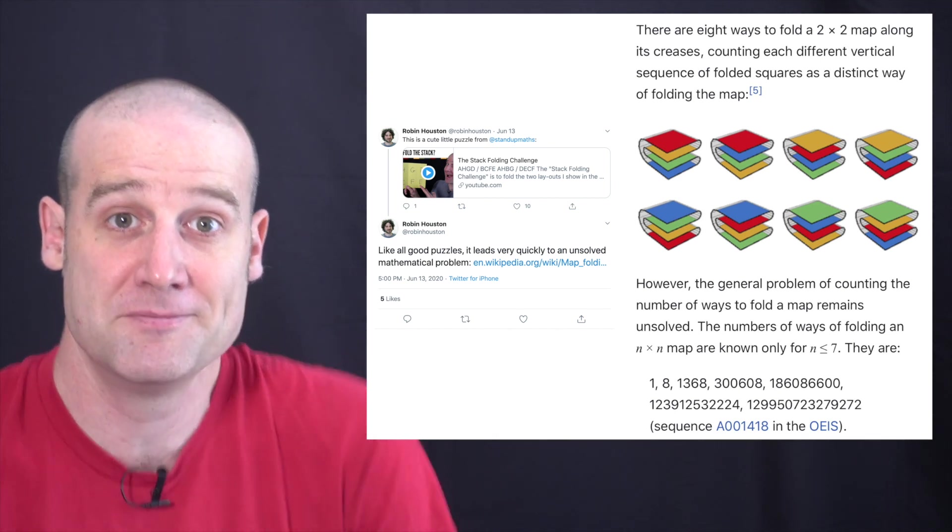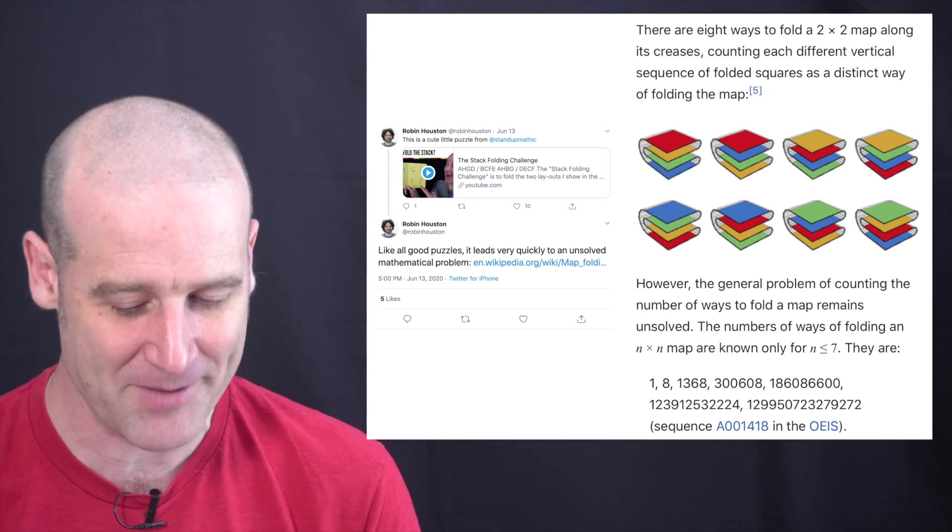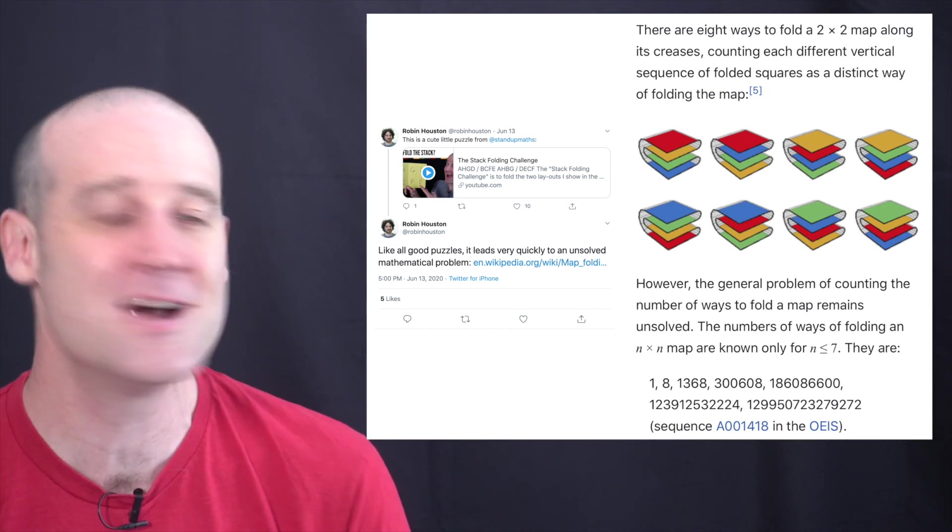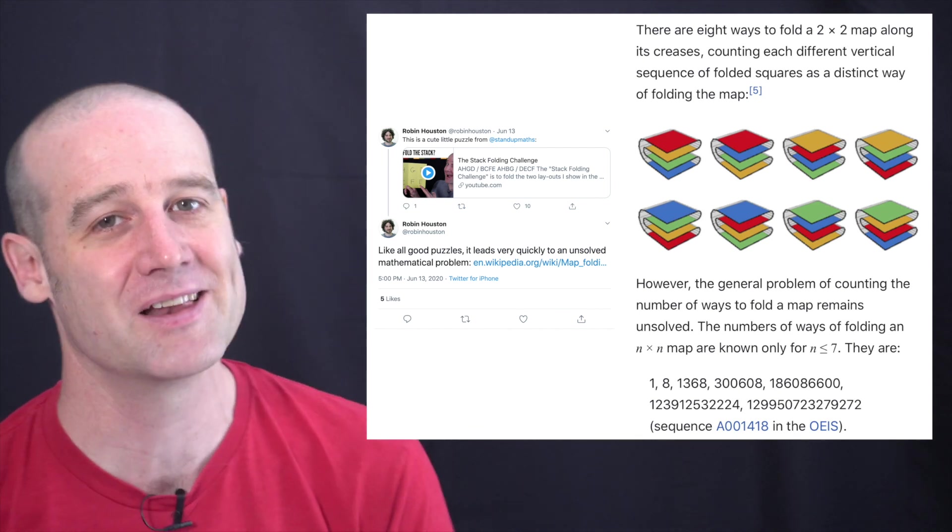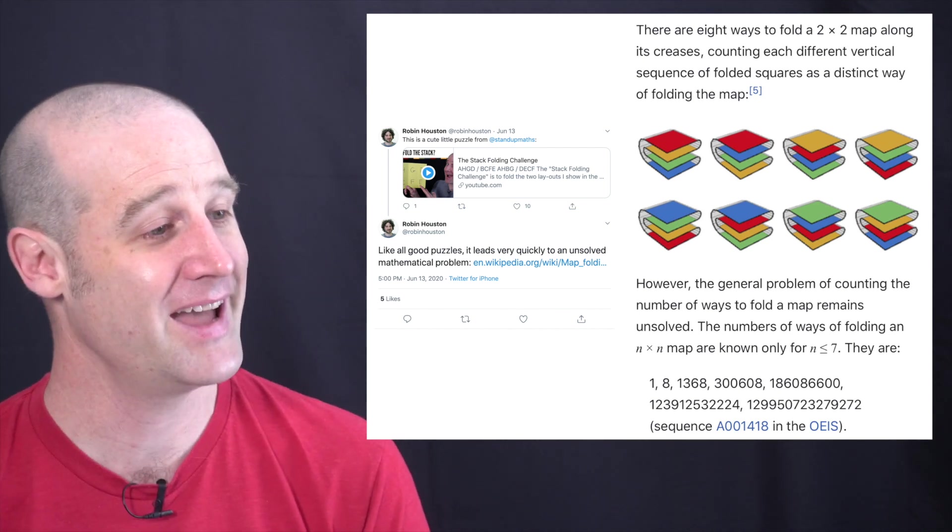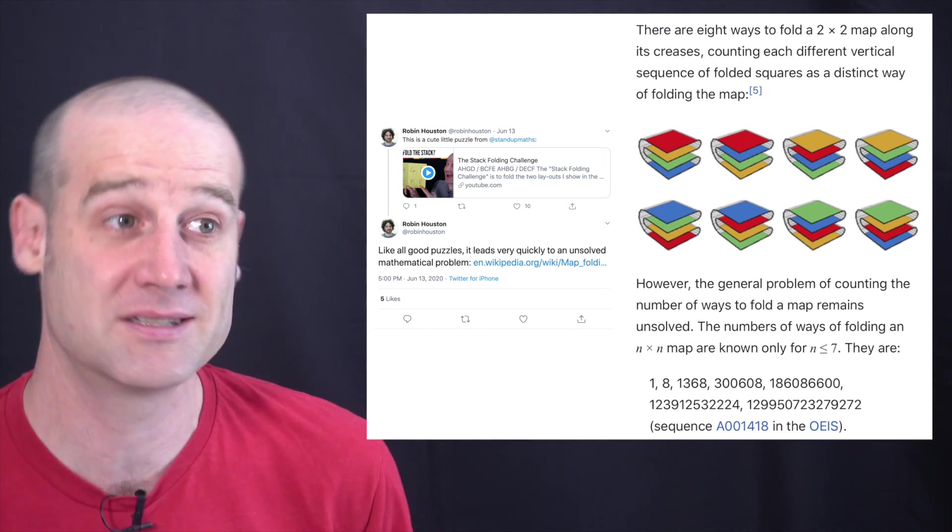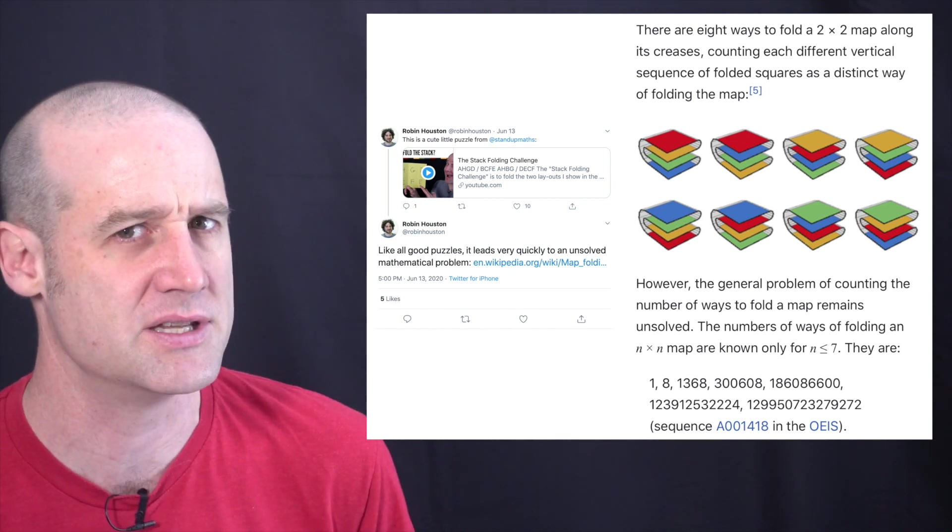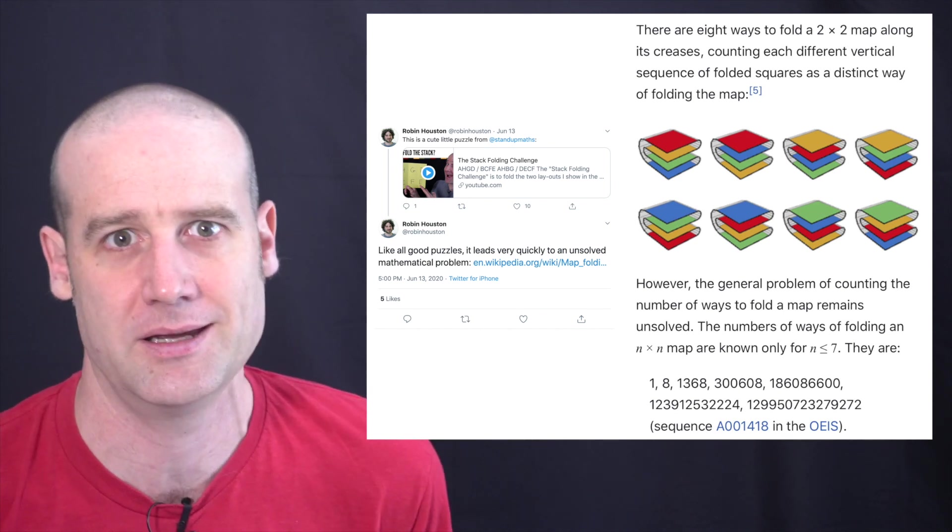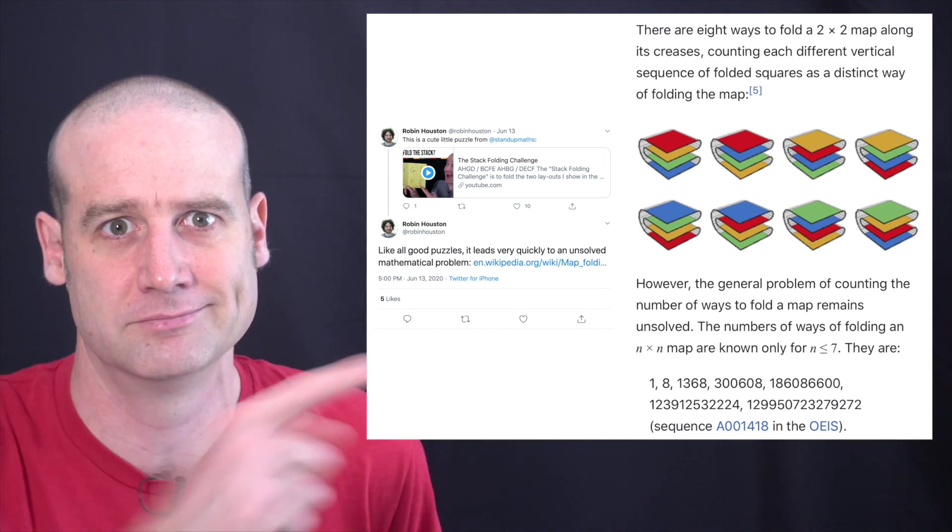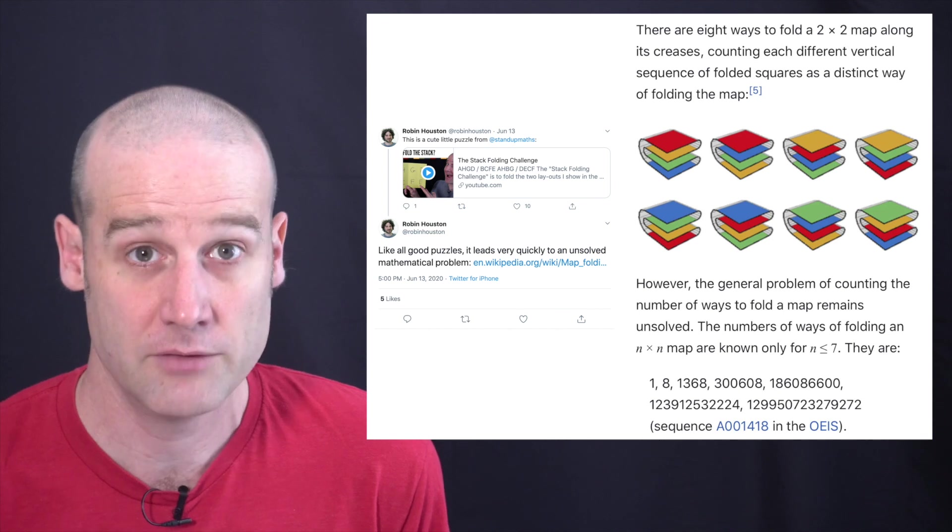And so Robin then tweeted a screen grab from the Wikipedia article. I'll link to Robin's tweets and the Wikipedia article below. So we don't know. There you are. If you want to do some new maths, can you work it out for eight by eight? It's going to be a big old number. Oh, spoiler. It's going to take a while. But hey, that's what we do around here. So if you want to give it a go, no one's done it for the last. So Martin Gardner did mention this in 71. So no one's done it in half a century. Get onto it. How hard can it be? Very hard. Right.